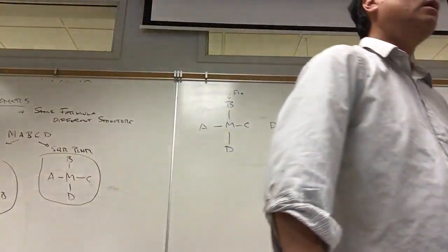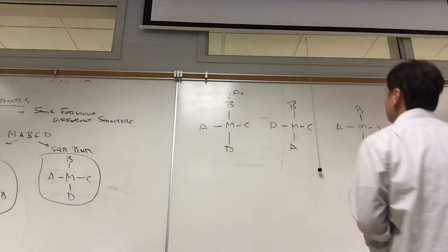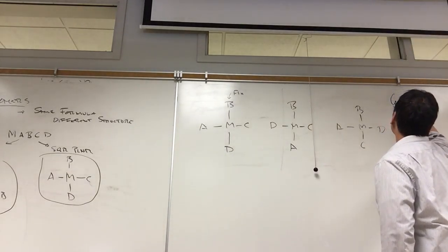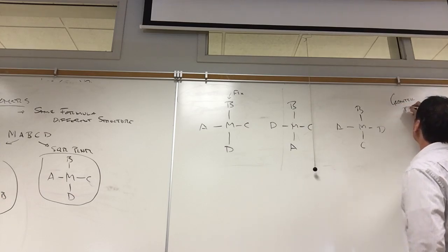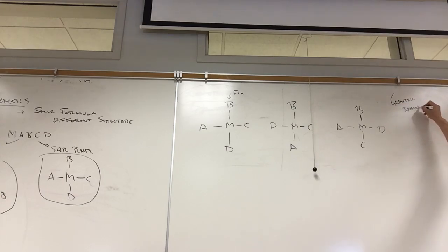What we call these, we call these geometric isomers. We use these terms: we call cis, trans, and then we have two more, face, mirror. Face, mirror only for octahedral. Cis, trans are both for tetrahedral and octahedral.